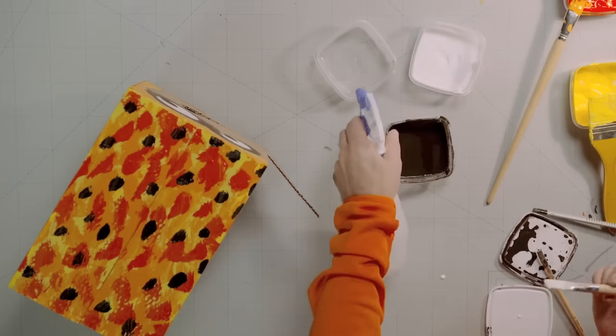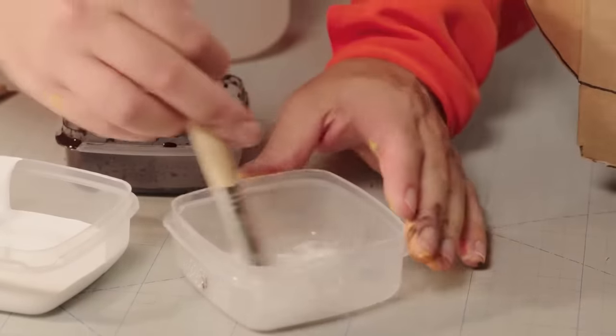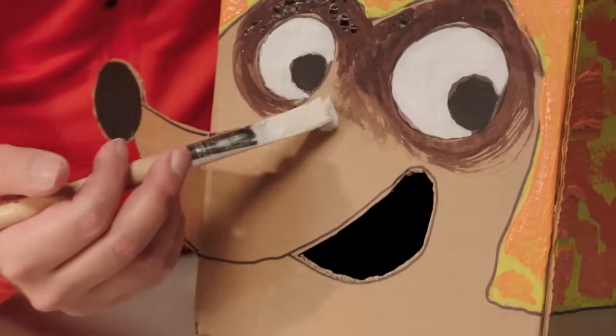Next, thin down some white paint the same way. Use this see-through paint to lighten up the brown cardboard colour.